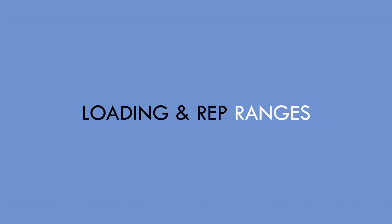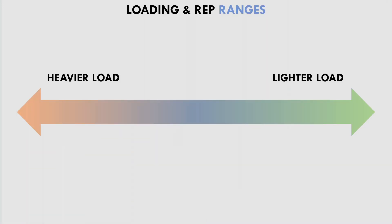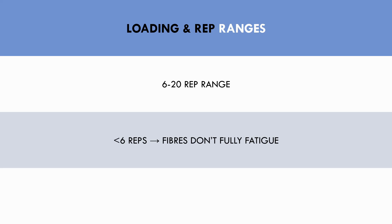Now that we understand training should be taken close enough to failure to train all muscle fibres, we need to establish what load and rep ranges should be used. Load and reps performed have an inverse relationship — as load increases, the number of reps performed in a given set decreases, and vice versa. So if we determine the rep ranges we want to train in and know that we need to take sets 1-3 reps from failure, we can adjust the load to fit this criteria. For muscle growth, it seems that the best range to work in is around 6-20 reps. We don't want to train in the 1-5 rep range since this doesn't provide enough reps to fully fatigue the muscle fibres, and we don't want to use rep ranges too high, as very light loads simply don't provide enough mechanical tension for optimal muscle growth.